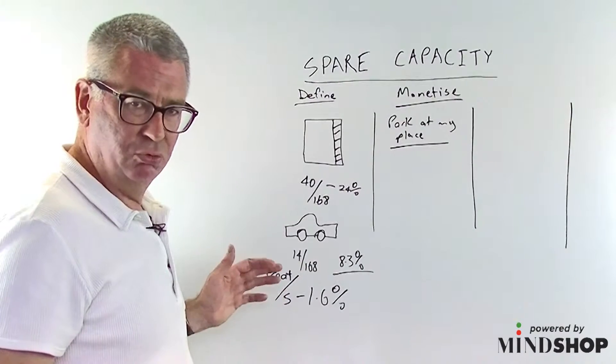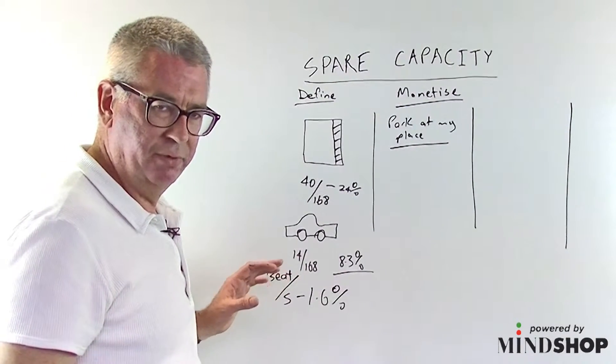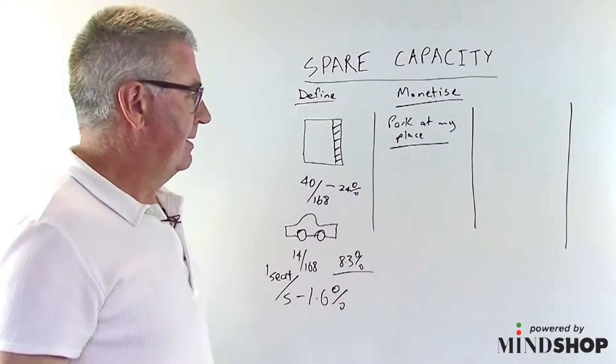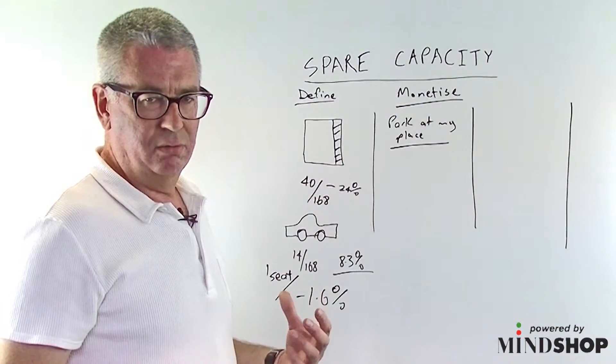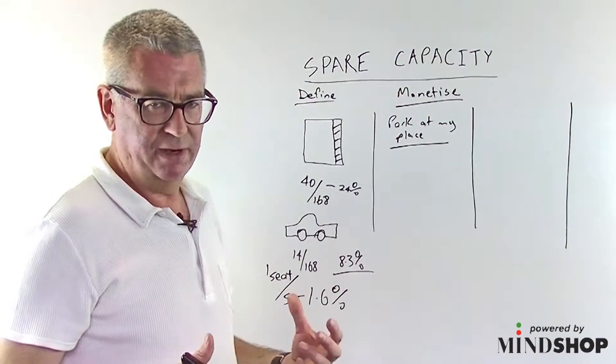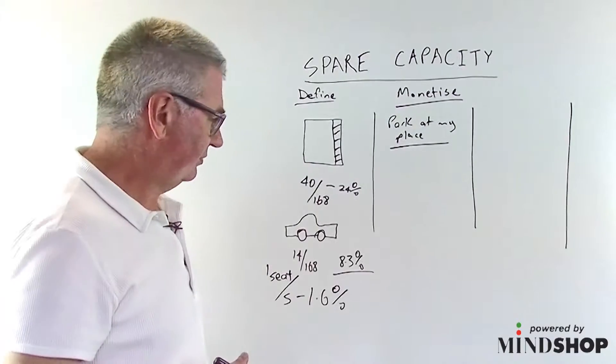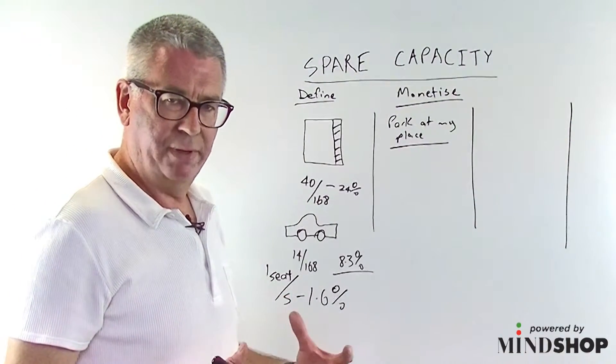There are peer to peer models where private car owners can rent their cars out when they're not being used. And one of the leading massively growing websites around the world is Airbnb, one of my favorites. That's where people rent out spare rooms and apartments.